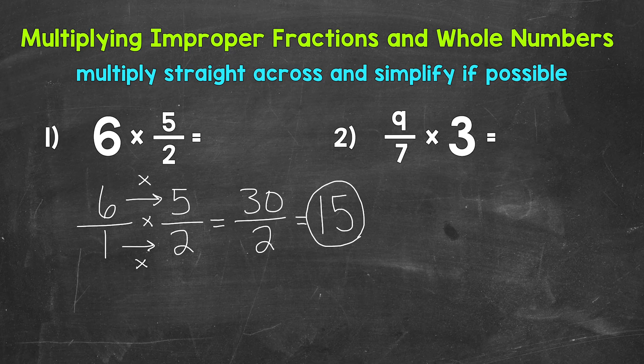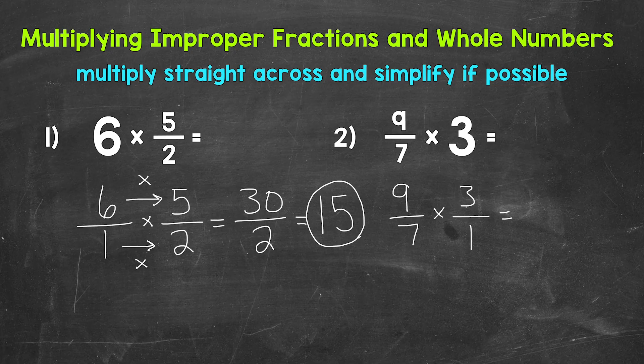Let's move on to number 2 where we have 9 sevenths times 3. Let's rewrite this with the whole number in fractional form, so that we have a numerator and a denominator and we can multiply straight across. Let's start with the numerators: 9 times 3 is 27. Now for the denominators: 7 times 1 is 7. So we end up with 27 sevenths, which is an improper fraction.